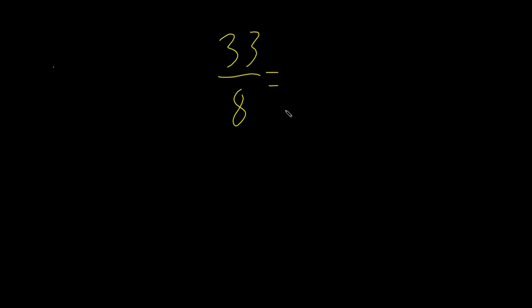So our first step is to actually keep the same denominator because when we're converting improper fractions into mixed numbers, we actually don't change the denominators. We keep them as is. So 8 is going to be our denominator of our mixed number.